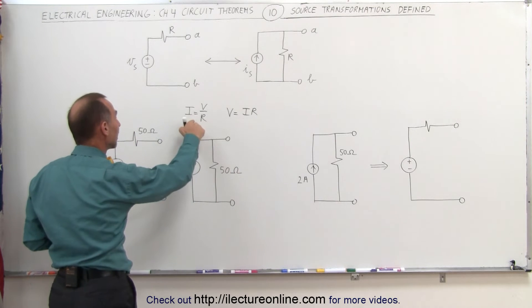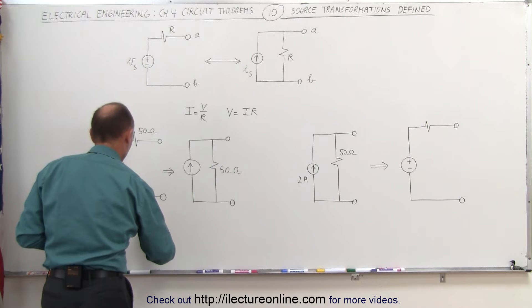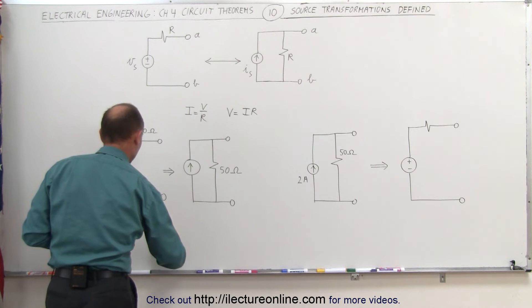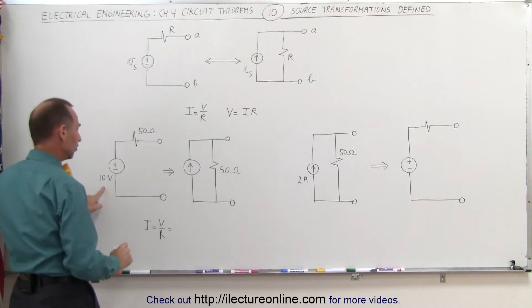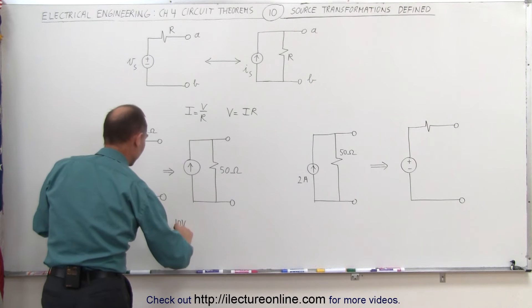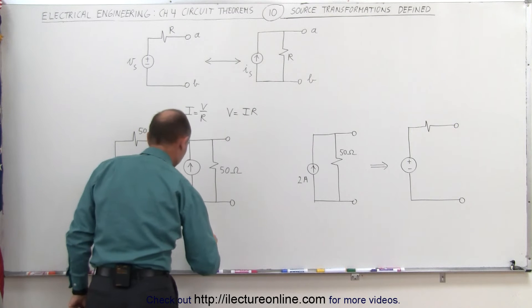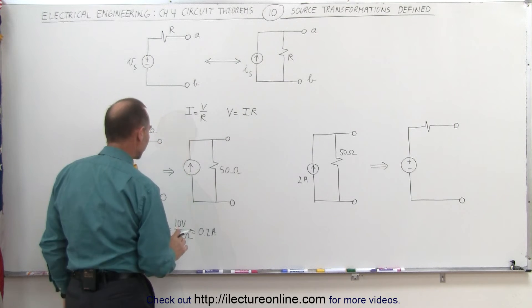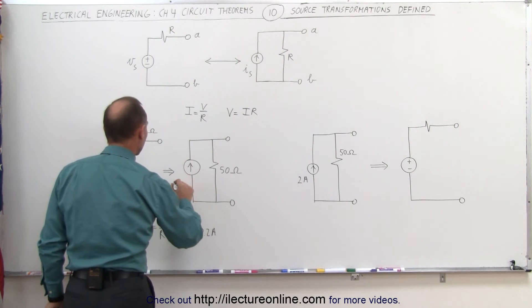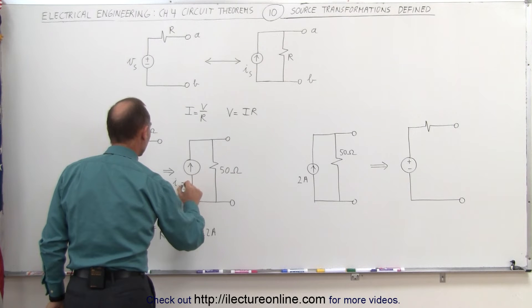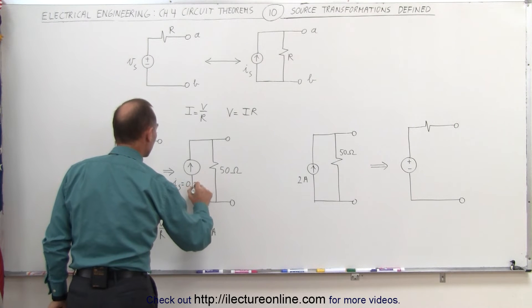However, the current will need to take on the value according to Ohm's law. I is equal to V divided by R. In this case, V is 10 volts. R is 50 ohms. And therefore, that is equal to 0.2 amps. We place that in here, we can then say that I of the source is equal to 0.2 amps.